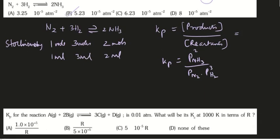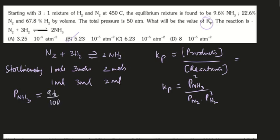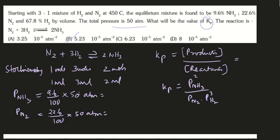The partial pressure of ammonia is 9.6% of total pressure. So P(NH₃) equals 9.6 divided by 100 times total pressure. Total pressure is 50 atm. That gives the partial pressure of ammonia as 4.8 atm. The partial pressure of nitrogen: 22.6% by 100 into 50 atm equals 11.3 atm.